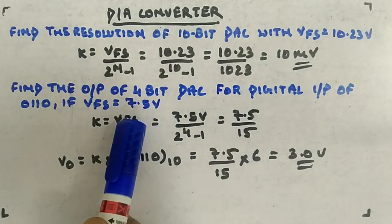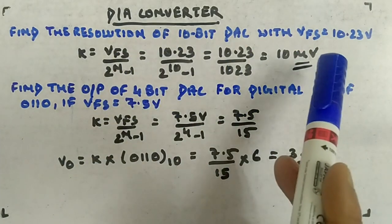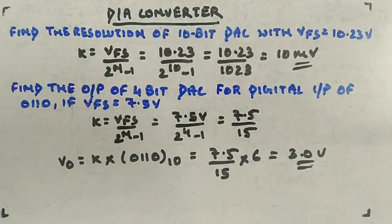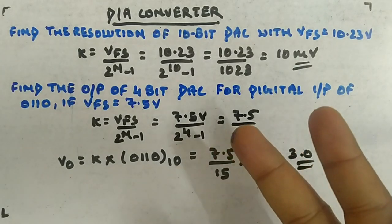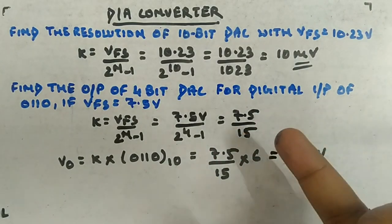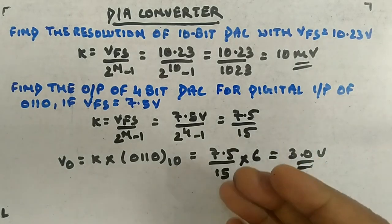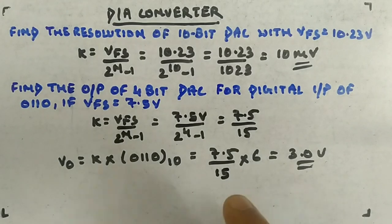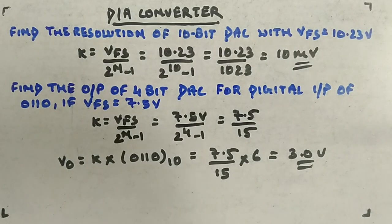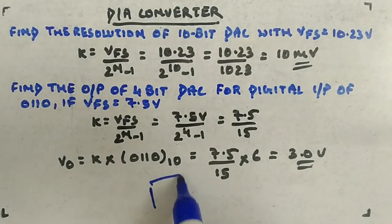The maximum output can go up to 7.5 V, and the minimum step size is 10 mV. Hopefully it's clear about resolution — there are two ways to calculate it: through full-scale voltage or LSB voltage. Now we know what resolution and step size mean. From the next video, we'll get inside the DAC circuit and look at different types, such as R-2R, inverted R-2R, and weighted binary resistor types.